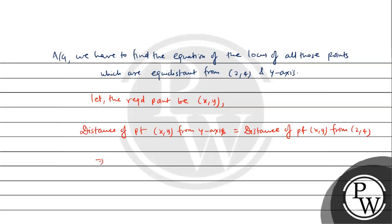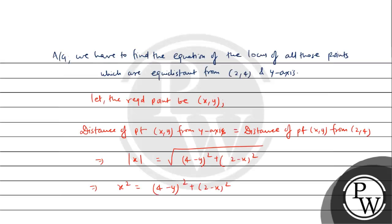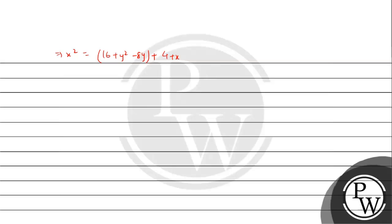Now, distance of point (x,y) from y-axis will be equal to x. So, x = √[(y-4)² + (x-2)²]. Further simplify, then x² = (y-4)² + (x-2)². Then, x² = 16 + y² - 8y + 4 + x² - 4x.